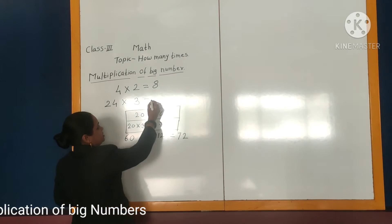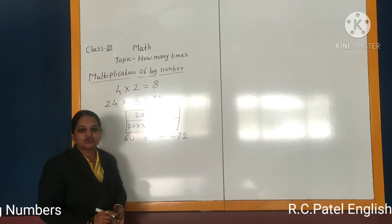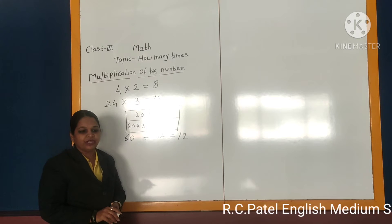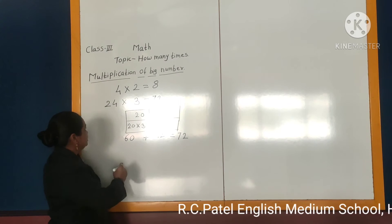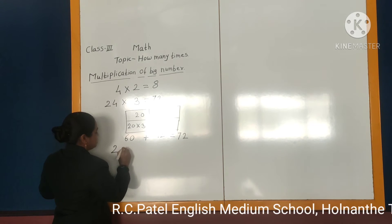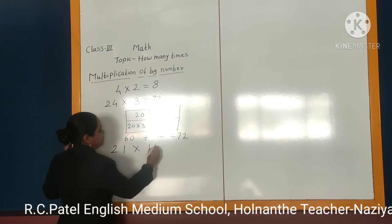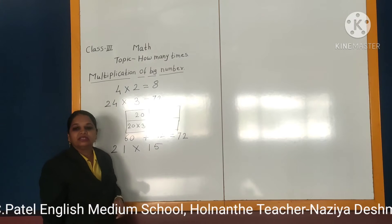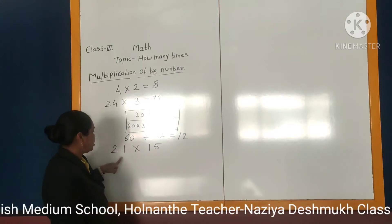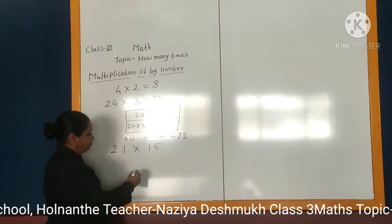It is very easy to solve. We will take another example. If I tell you to do the multiplication of 21 multiplied by 15, the same thing you have to do — you have to break down both these numbers: 21 as well as 15.